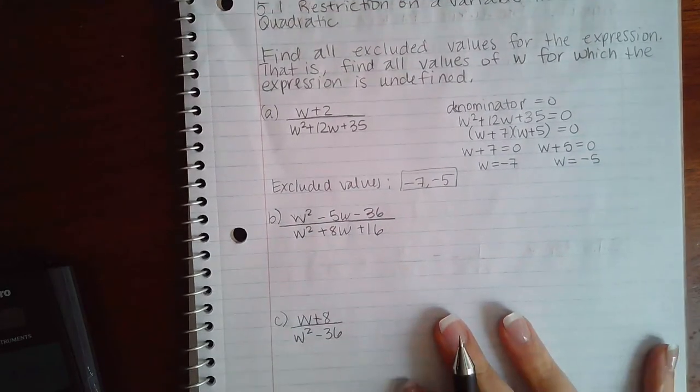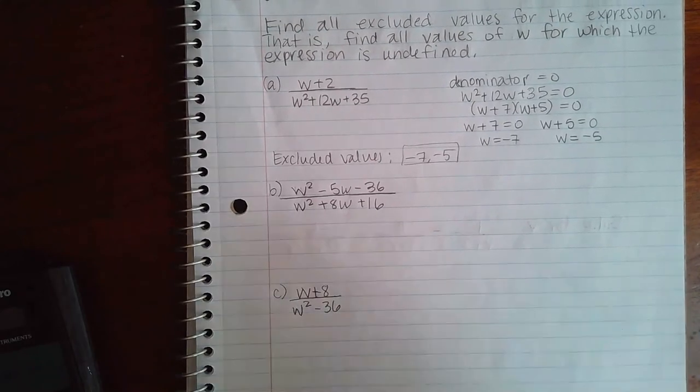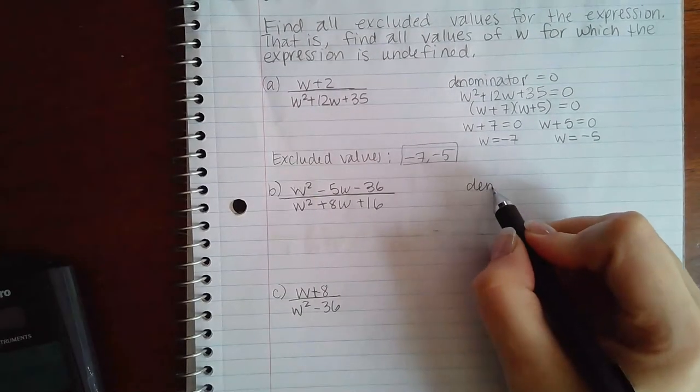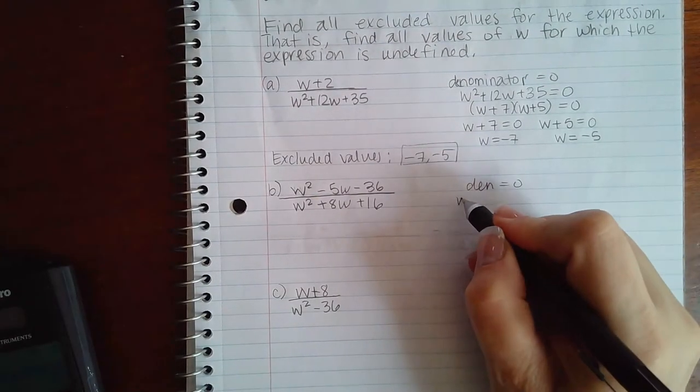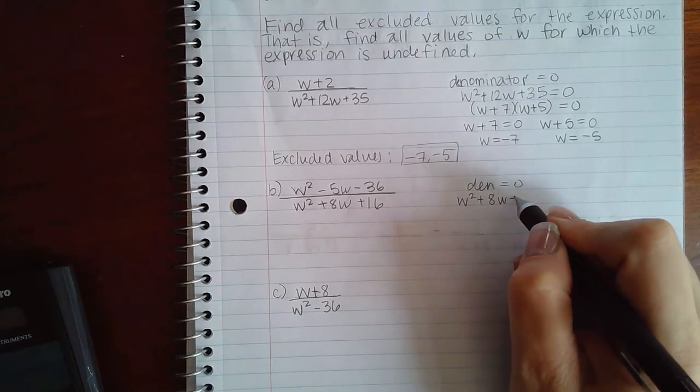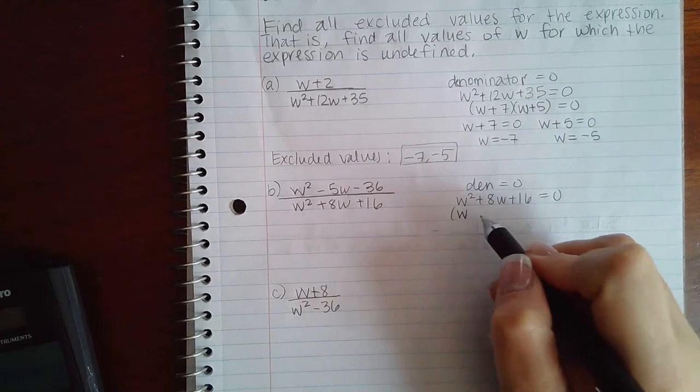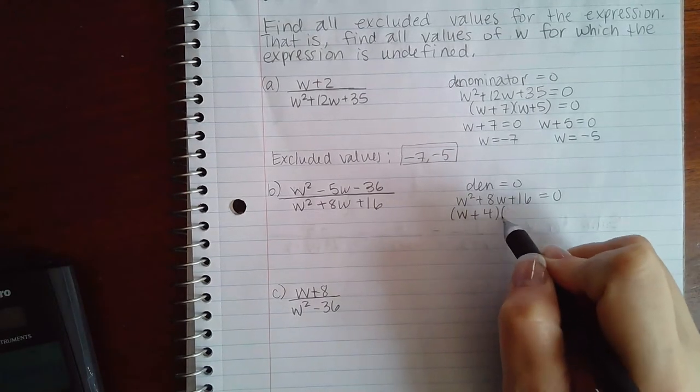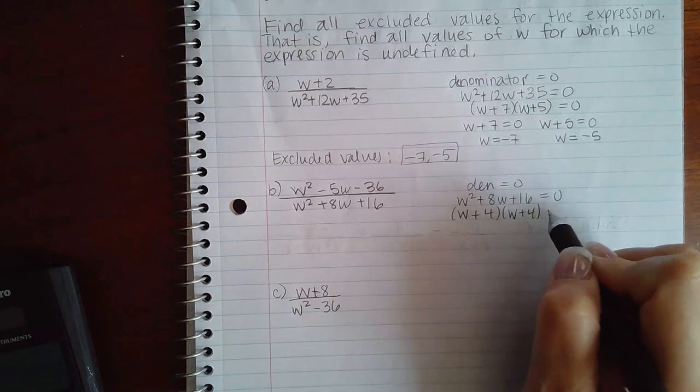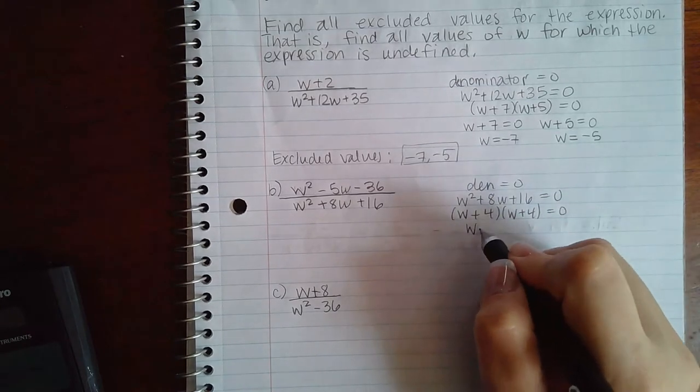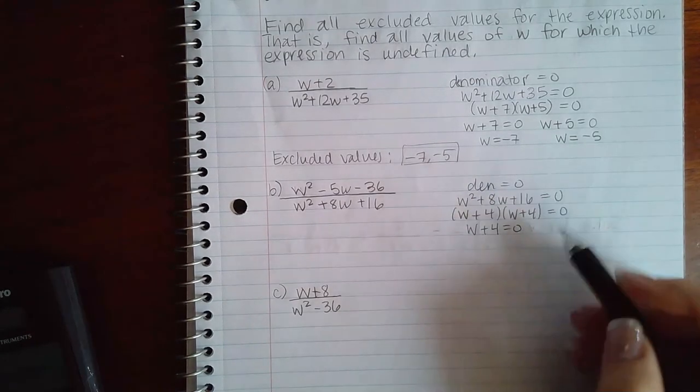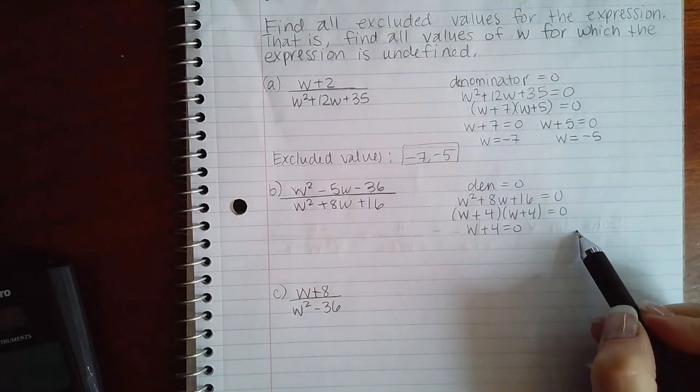Now similarly for B, again we're just taking that denominator equal to zero. So we're taking W squared plus 8W plus 16 equal to zero. Again I can factor this pretty easily: W plus 4 and W plus 4. So I'm going to take W plus 4 equal to zero, and there's no sense in doing it again because it's the exact same thing.